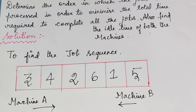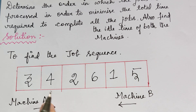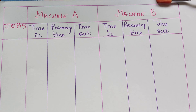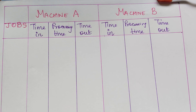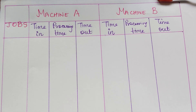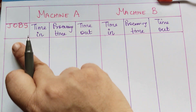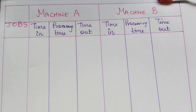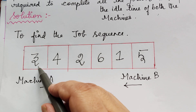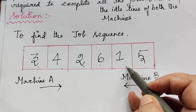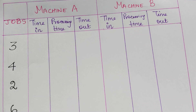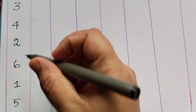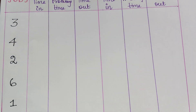We shall now form the table of columns, as explained in the previous video lecture. The jobs are written in the order we have found: 3, 4, 2, 6, 1, 5. Let us write that in the column.